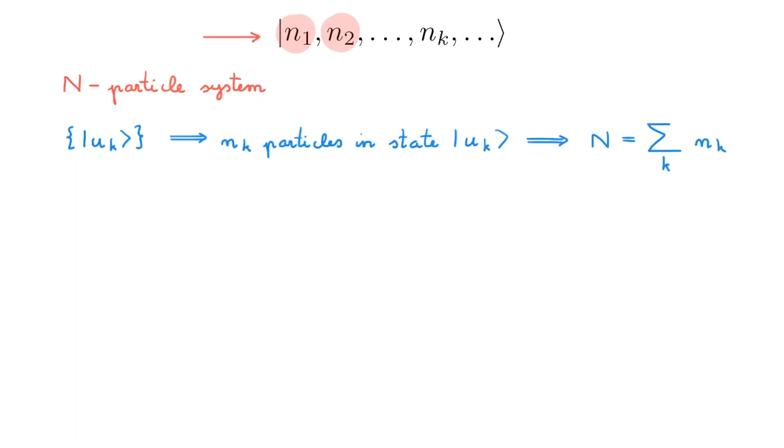States like this one up here have well-defined occupation numbers given by the nk values and have a well-defined total number of particles given by the capital N. States with a well-defined number of particles are called Fock states.